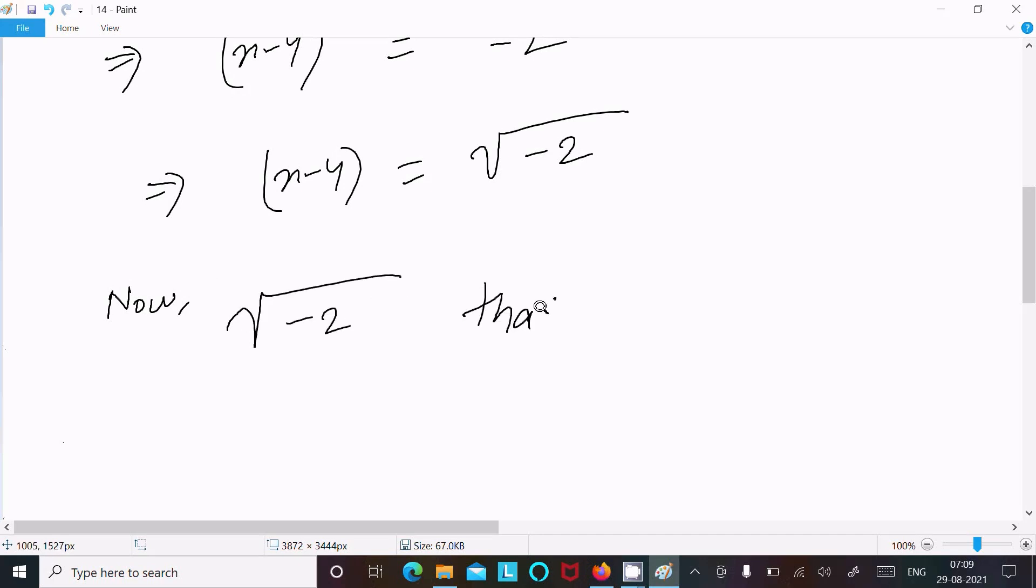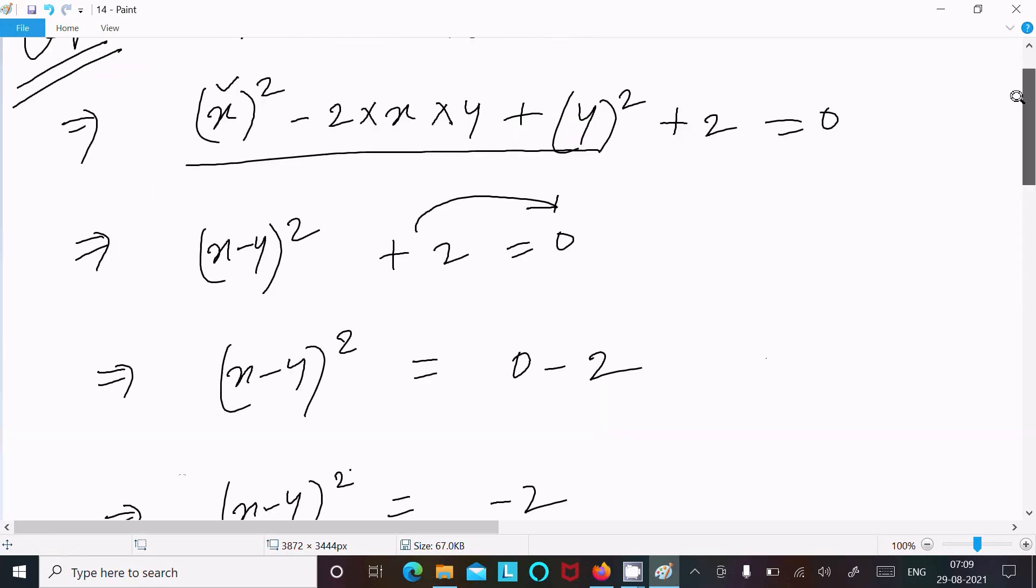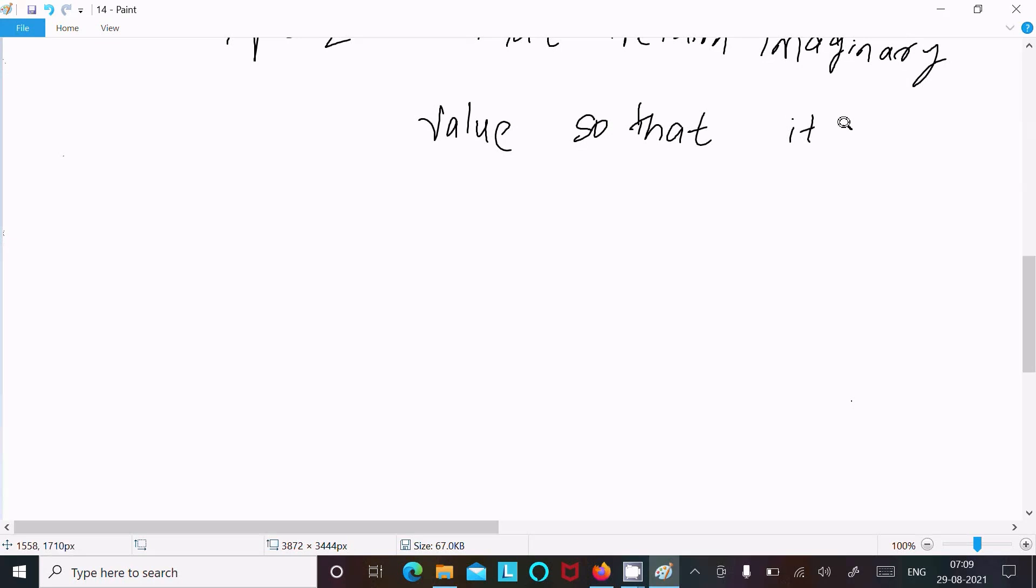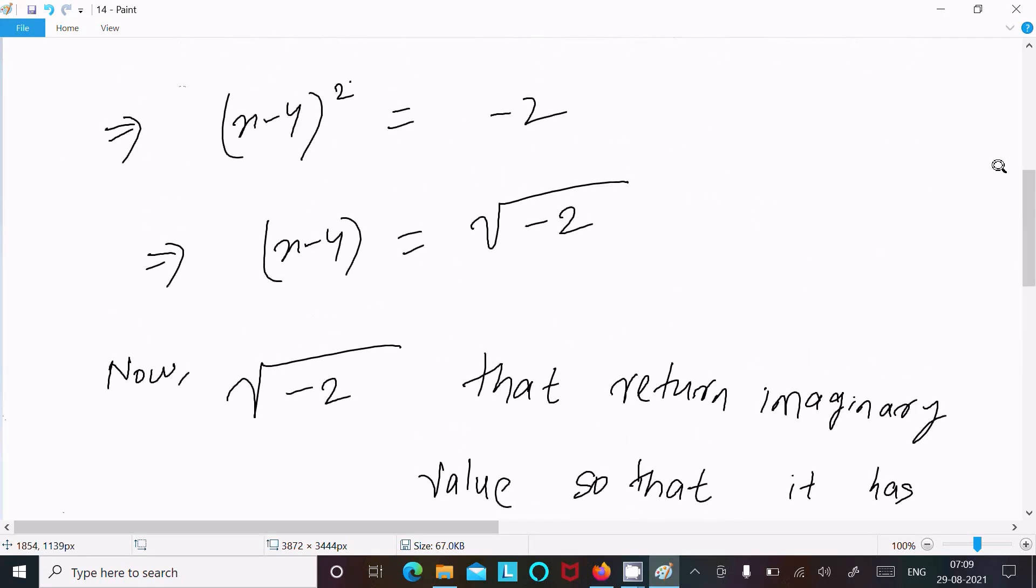That returns imaginary value, so that it has no real solution, because here square root minus 2 returns some value 0.449i.